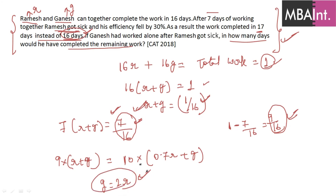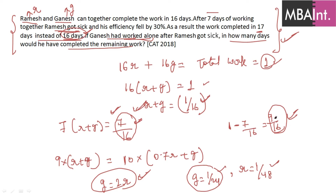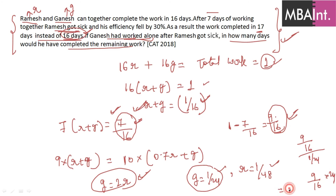Substituting G = 2R into the combined efficiency equation 1/16: R + 2R = 1/16, so 3R = 1/16, giving R = 1/48 and G = 1/24. The question asks how long Ganesh alone would take to complete the remaining work (9/16). Time = (9/16) ÷ (1/24) = (9/16) × 24 = 13.5 days.